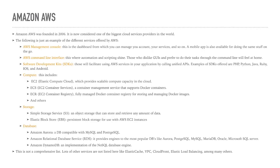Of course this is not a comprehensive list — many other services are not listed here, like ElastiCache, VPC, CloudFront, and Elastic Load Balancing, among many others. This was just a taste of what Amazon AWS looks like and how you can benefit from its services in hosting your infrastructure on the cloud. In the coming section, we are going to get our feet wet — creating an account on Amazon AWS and starting to build our sample web application. Until next section, take care.